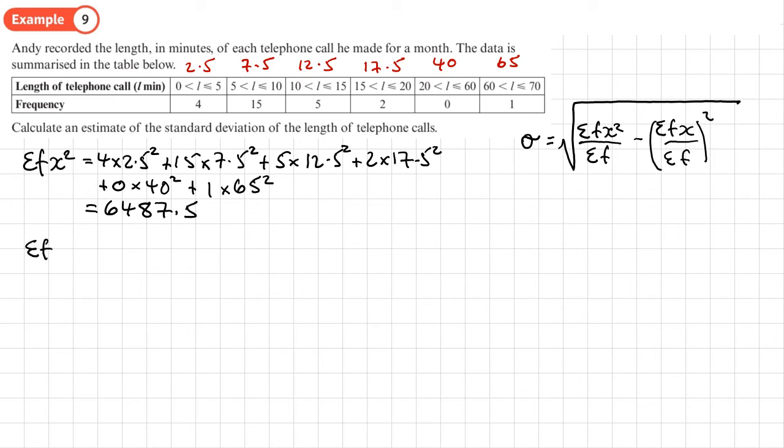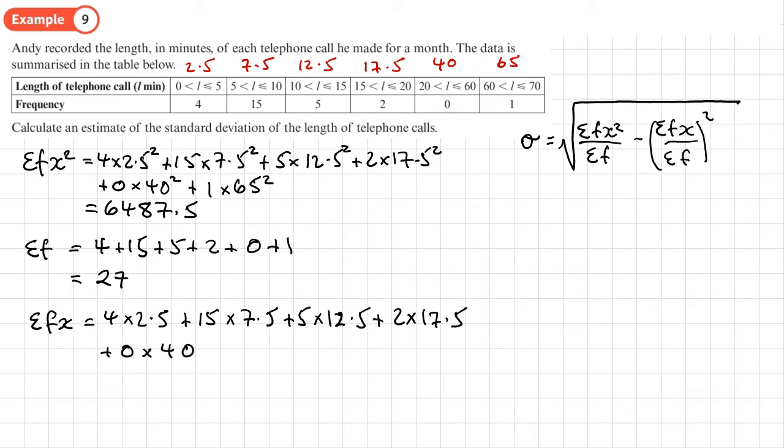Next, the sum of F. That's 4 + 15 + 5 + 2 + 0 + 1, which is 27. Lastly, the sum of FX is the frequencies times the midpoints: 4 × 2.5 + 15 × 7.5 + 5 × 12.5 + 2 × 17.5 + 0 × 40 + 1 × 65. We get 285.